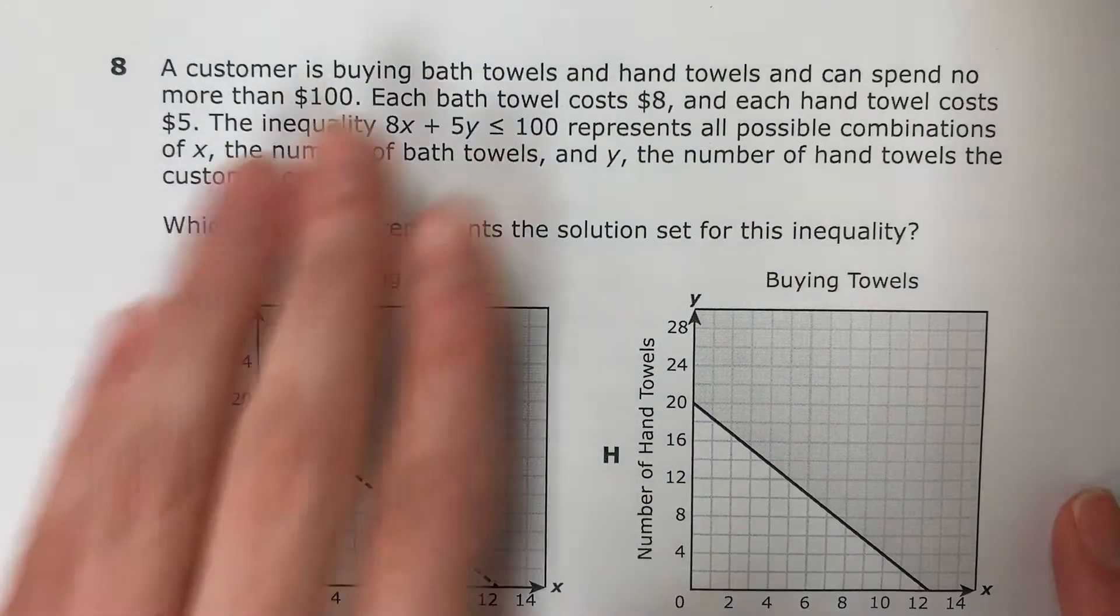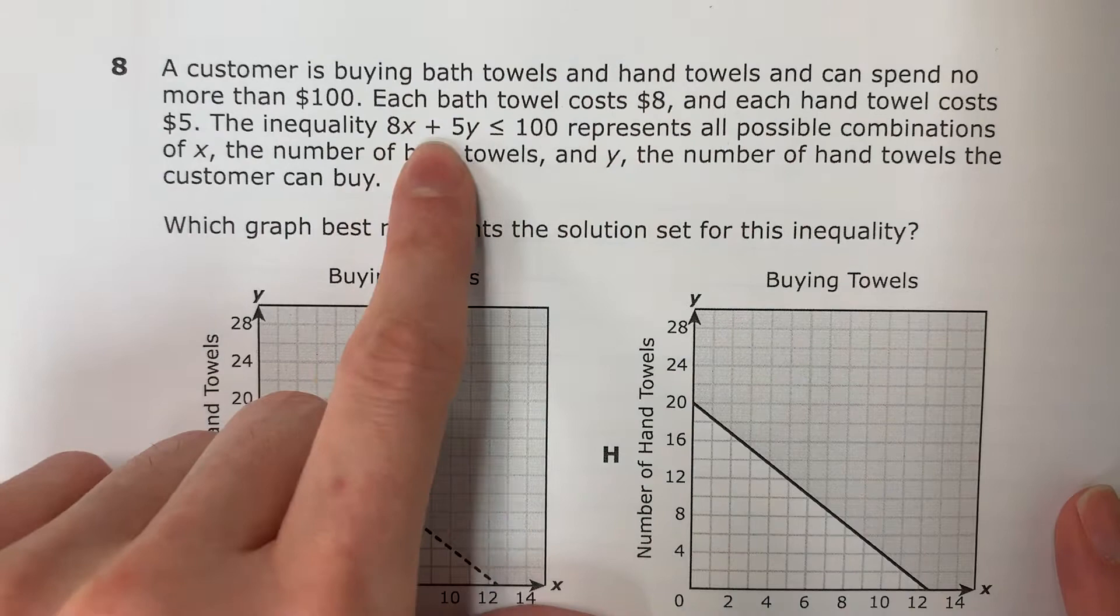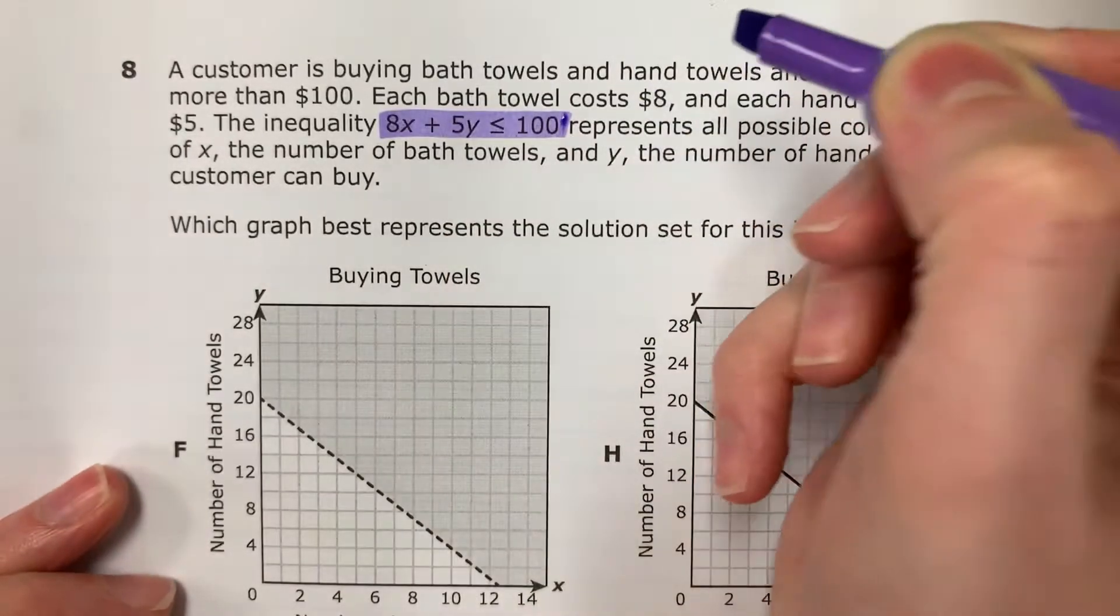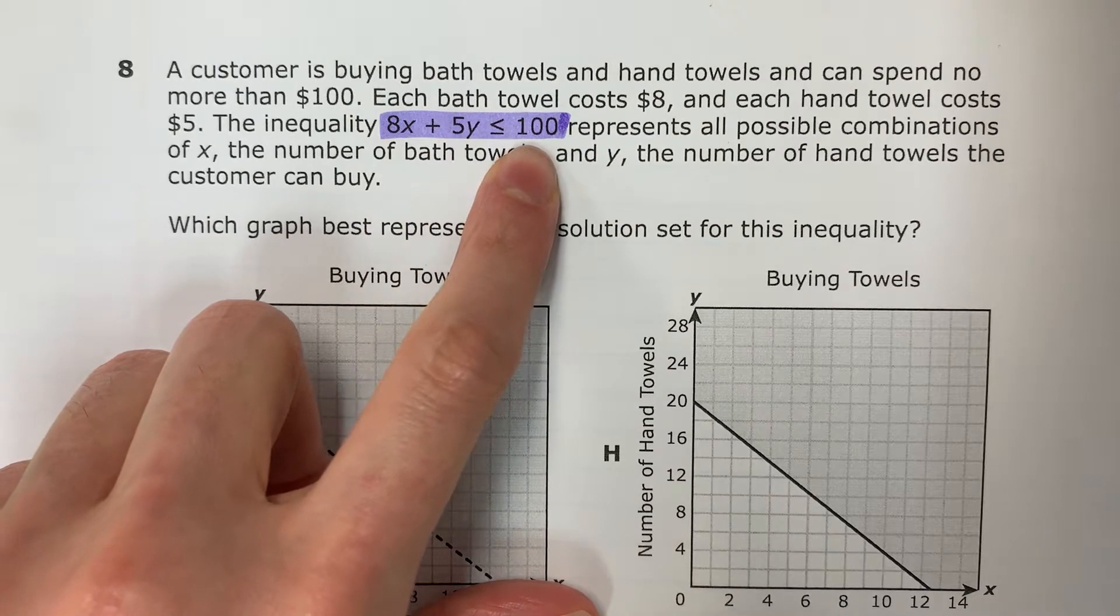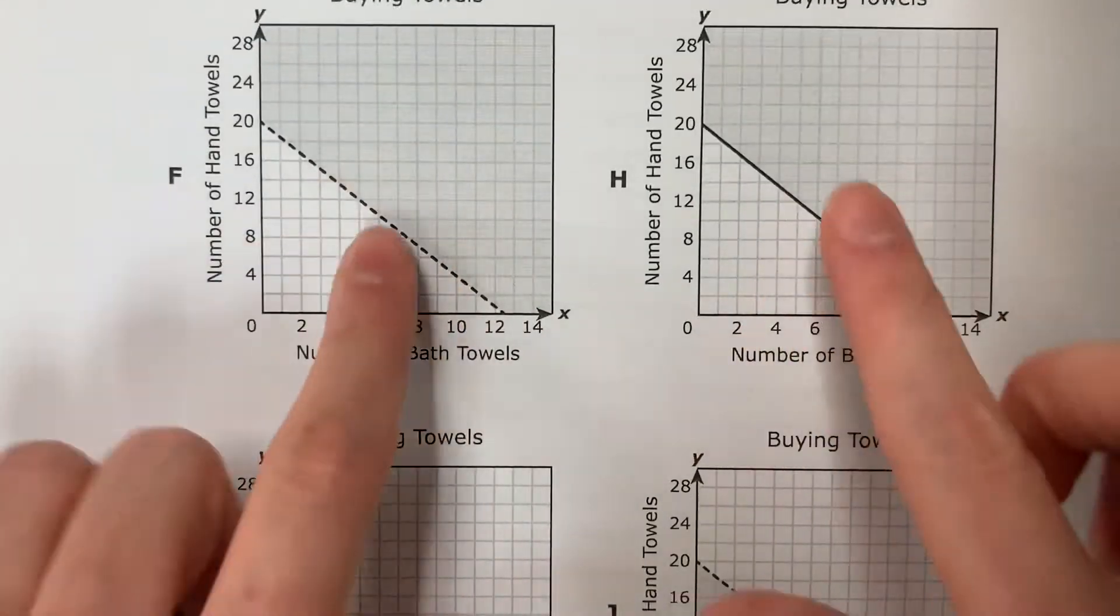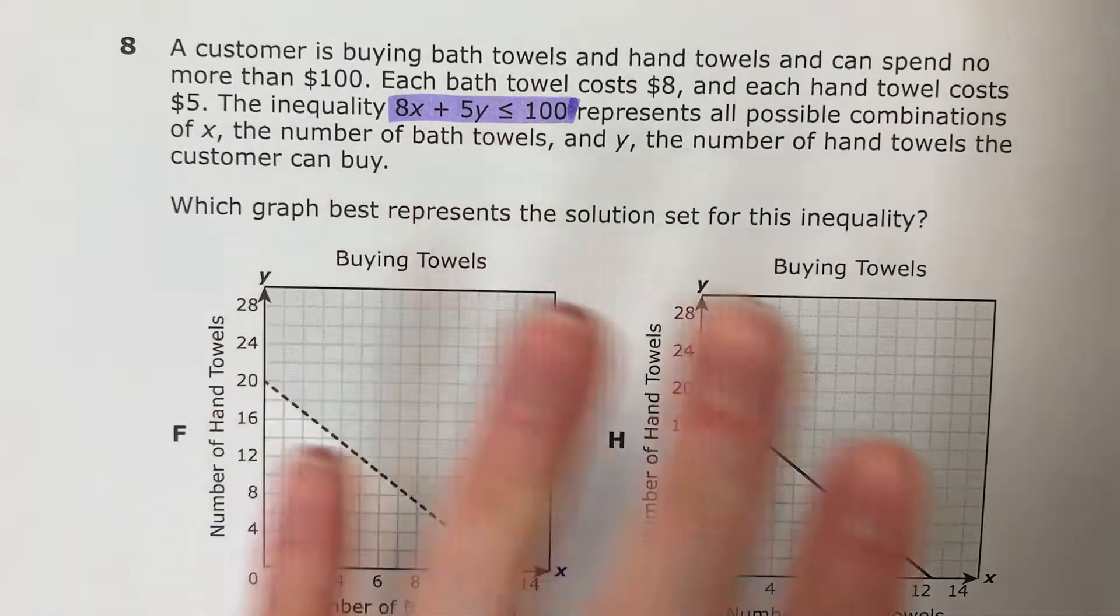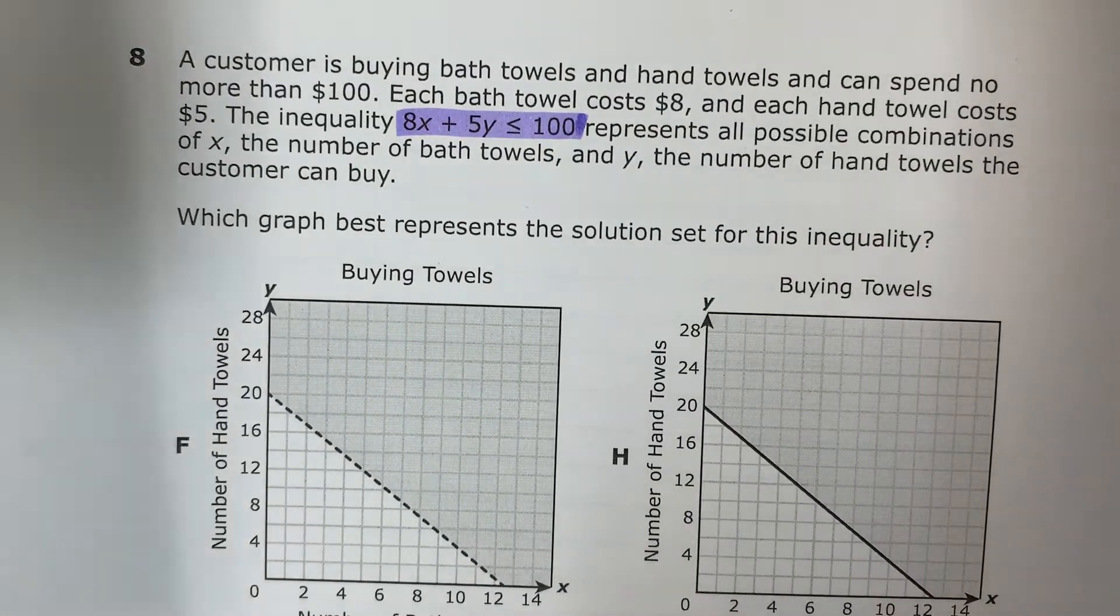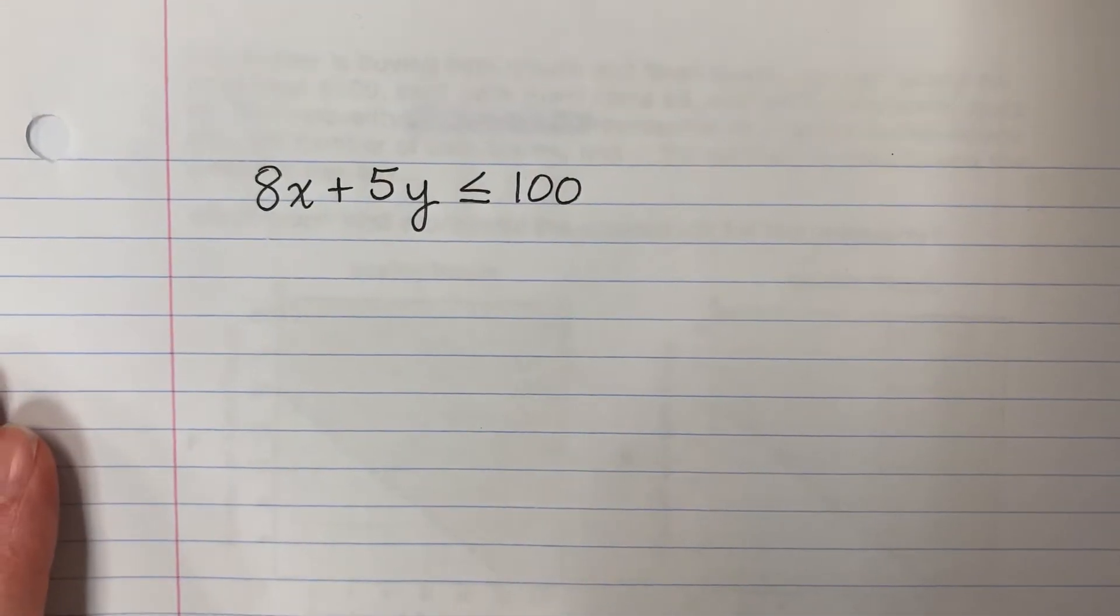So here you don't really need to understand any of the English. Aquí no deben que entender el inglés. You just have an equation. Solo tienen una ecuación. Here it is. 8x plus 5y is less than or equal to 100. And we're going to need to find which of these graphs is for this equation. So before we even look at the graph, let's go ahead and do it ourselves. We're going to go ahead and simplify this.